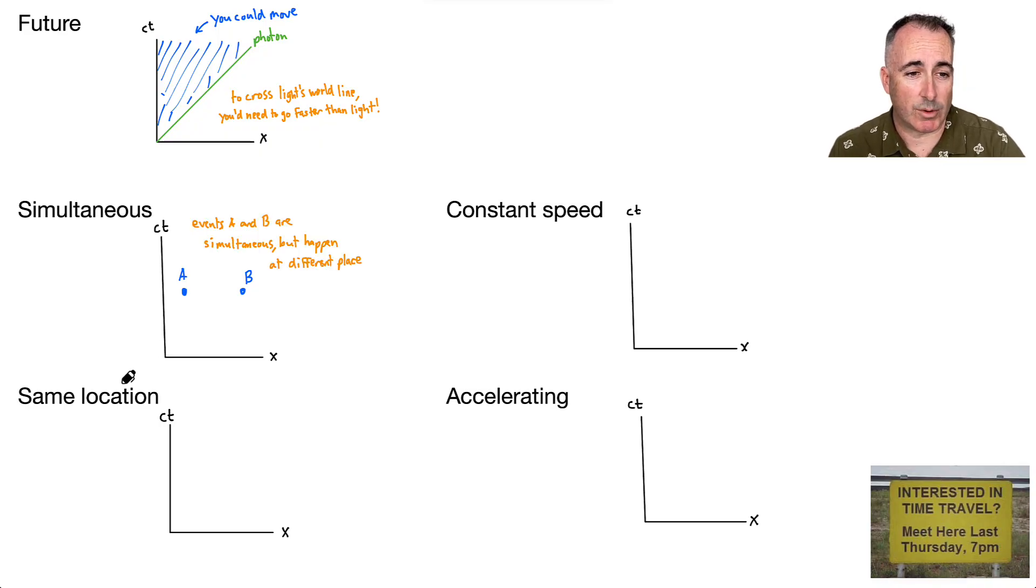Okay. So what about same location? Well, that would be two events. Let's say A and B. Maybe this is A here. Maybe this is B down here. These are two events that have the same location. Notice they happen at the same place. This is X. So they happen at the exact same value here, but they happen at different times.